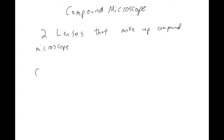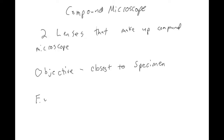The two lenses are: the objective, which is the one that's closest to the specimen or whatever you're looking at through your microscope, and then you also have the eyepiece, which of course is the lens that you look through.